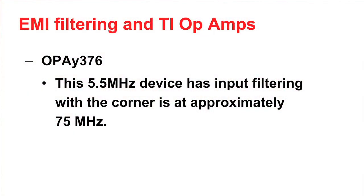In our portfolio of EMI input filtered op-amps, we have the OPA376. This is a 5.5 MHz device which has input filtering with a corner frequency at 75 MHz. It is a great low-noise, low-bias-current, high-precision op-amp to use in RF-sensitive environments.